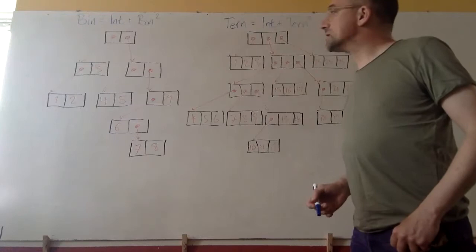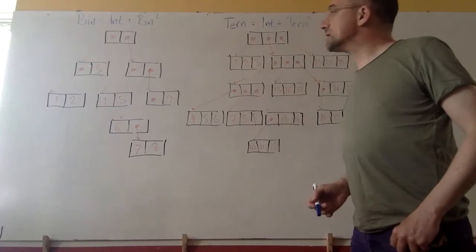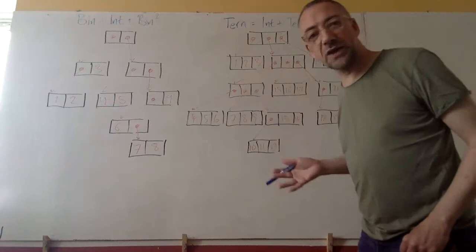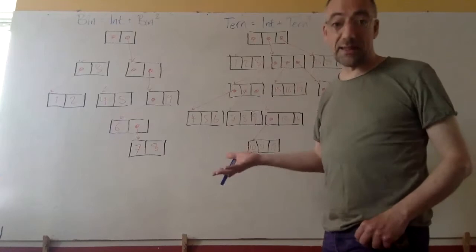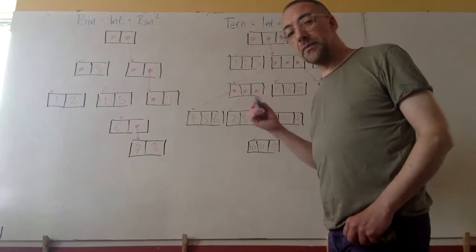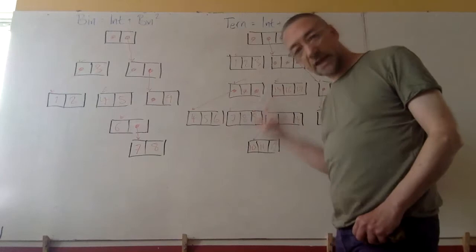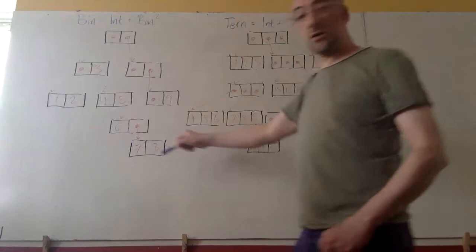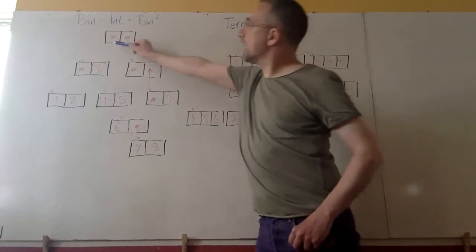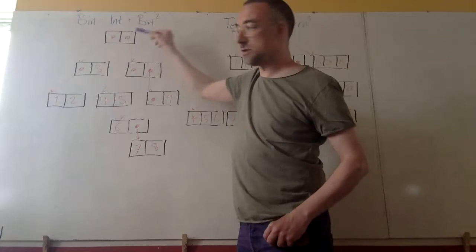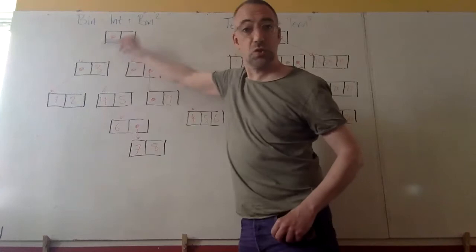Let's start with some examples. Contextualisation is a very important part of the way I think about all sorts of different things. This particular study is into spatial contextualisation inside data structures. Here's a binary tree and here's a ternary tree. This binary tree has nodes that have two substructures, and each substructure is either an integer or a pointer to another node.